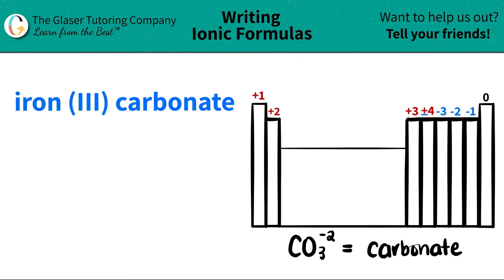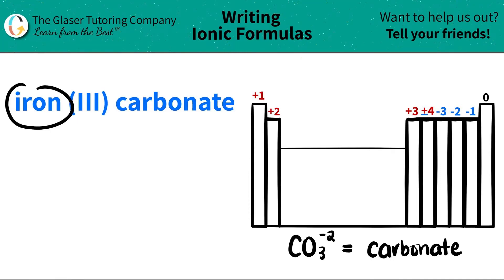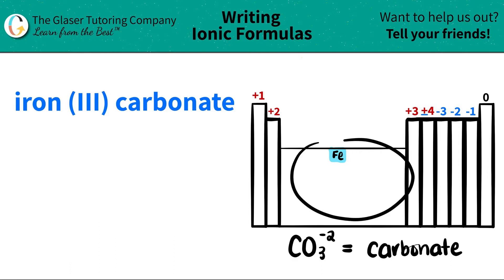Today, we are going to be writing the formula for the ionic compound iron-3-carbonate. Let's work from left to right. The first thing is we've got to find out where iron is on the periodic table. And iron is right around here — it's labeled as Fe. Iron is a transition metal, so I'm going to put that there.